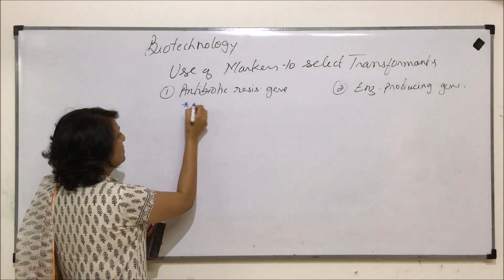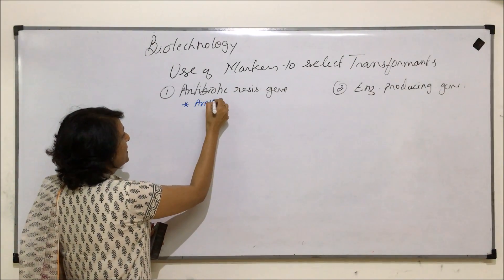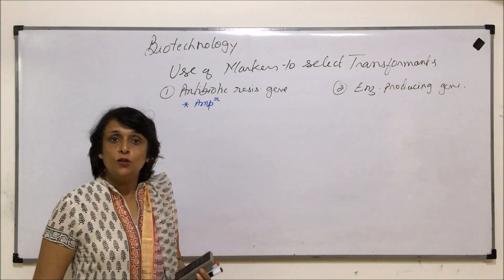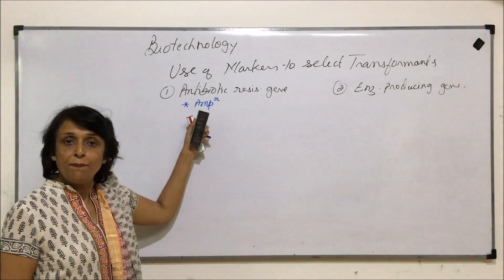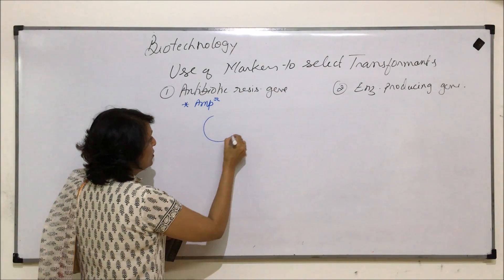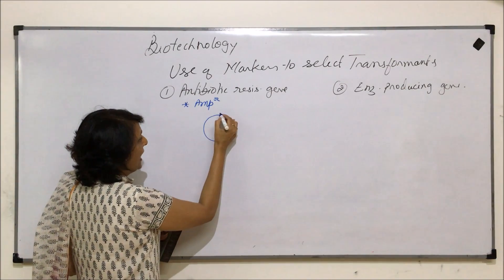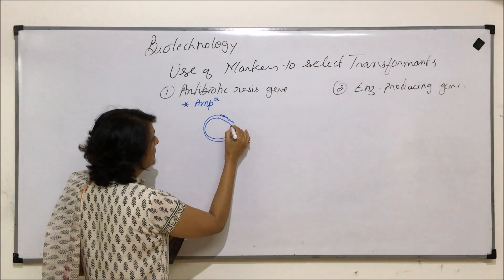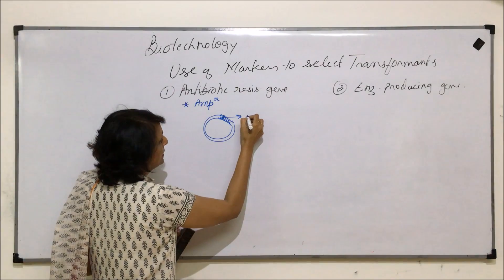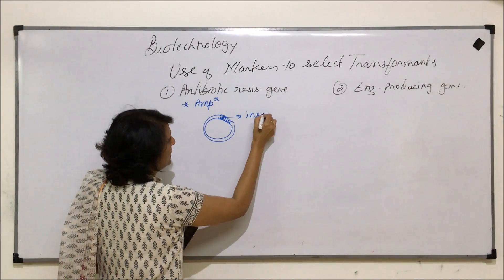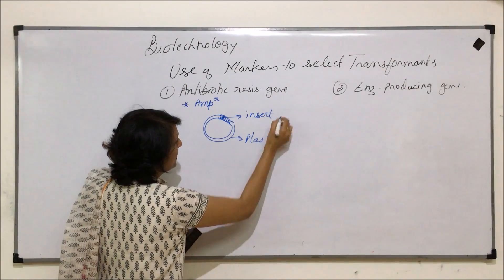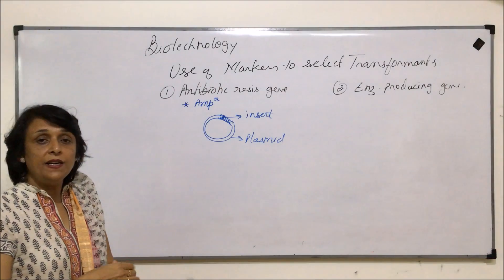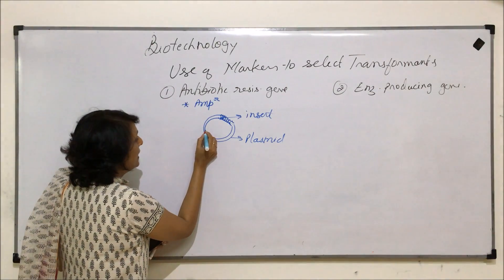Here we are taking an example of the ampicillin resistance gene. We talked of the vector PBR322, which has this ampicillin resistance gene. Suppose this is our recombinant DNA, and in this R-DNA we have introduced our desired gene. So this is our insert, and this is the plasmid which we are using.